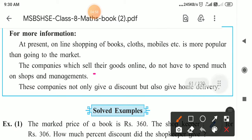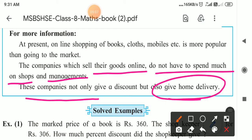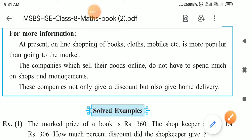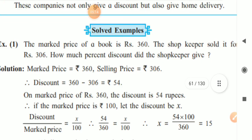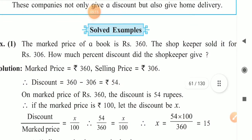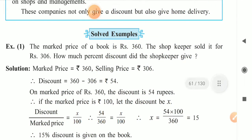When selling online, the shopkeeper's commission is less, and that's why companies are able to give more discount to the customer. These companies not only give a discount but also sometimes provide free home delivery, and sometimes they charge delivery charges.